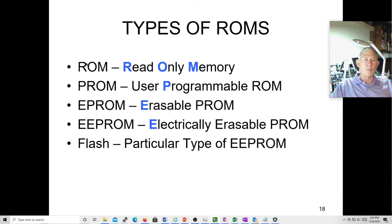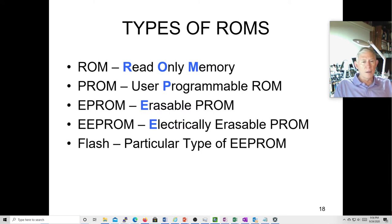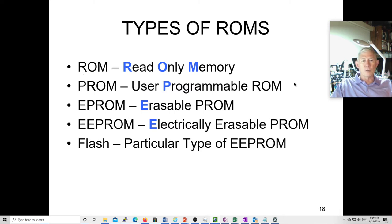A good example is keyboard decoders for laptops — you might have slightly different keys each run, and these are one-time programmable at the factory when manufactured. That makes them cheap, but there's that initial non-recurring engineering fee for the first setup. After that, if you buy enough, they get cheap and you amortize that one-time cost. You can also get a one-time programmable field-programmable ROM where you can program it once but can't change it.